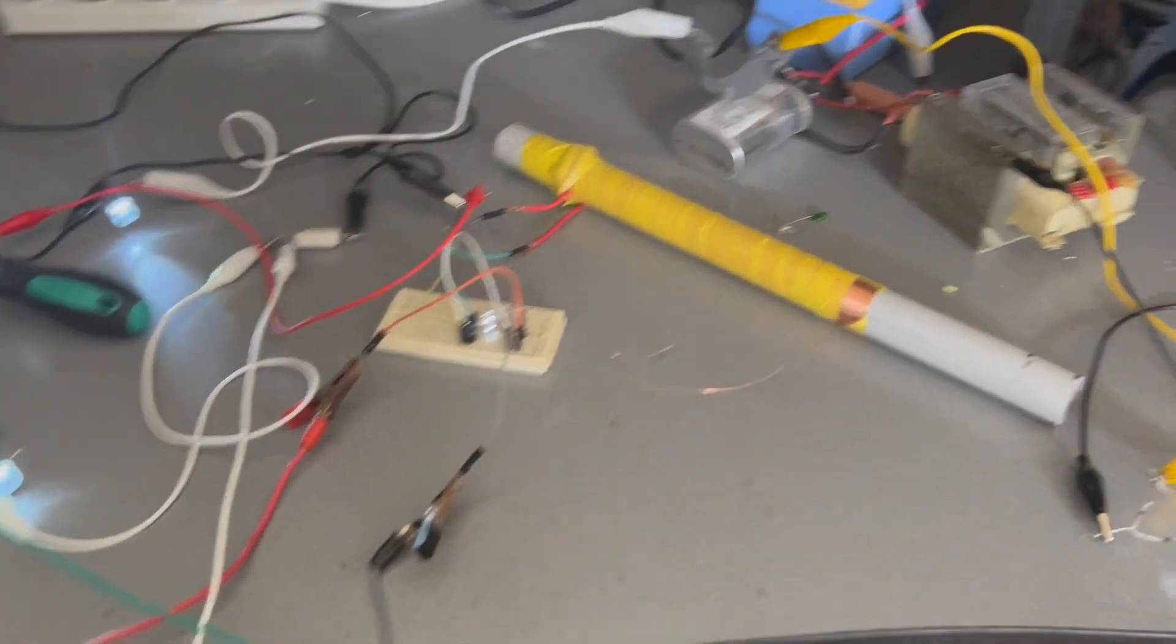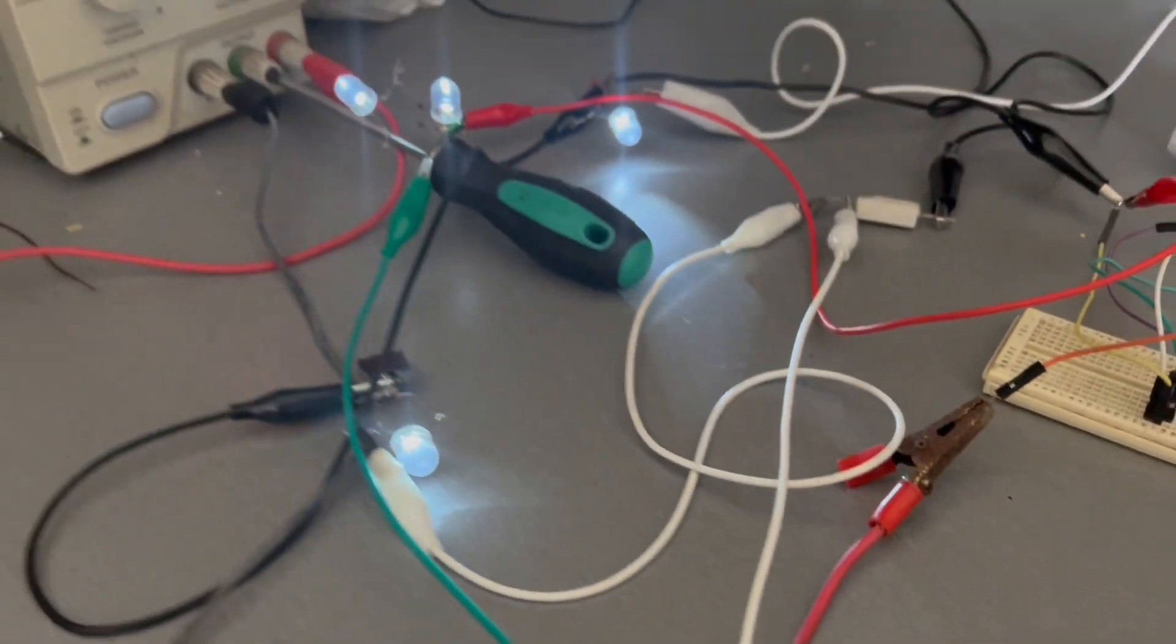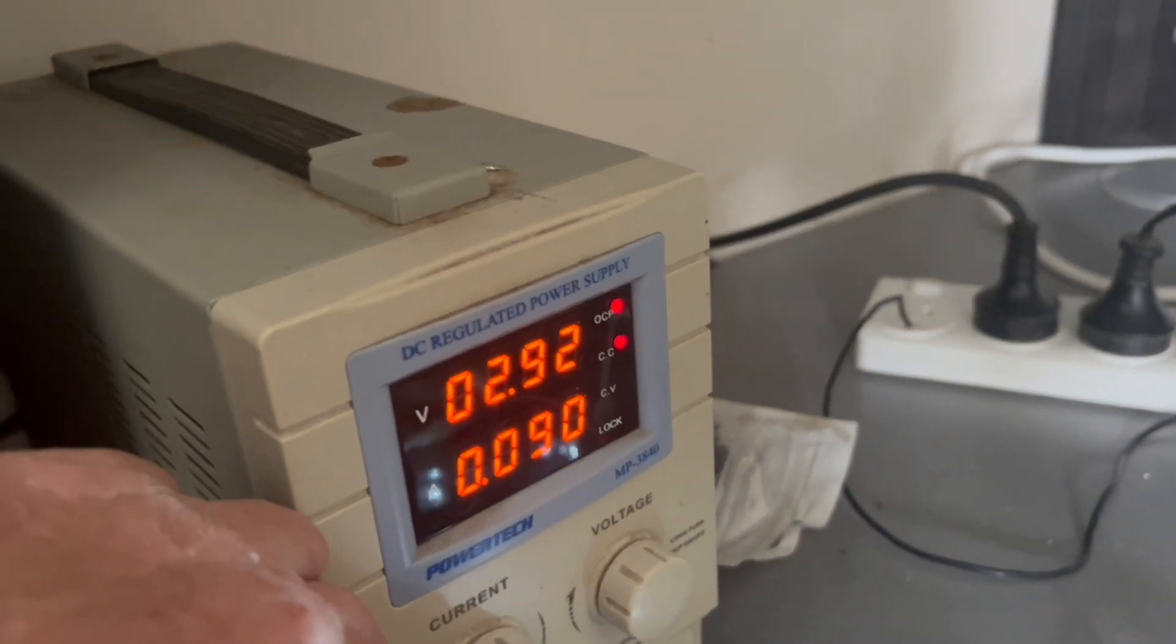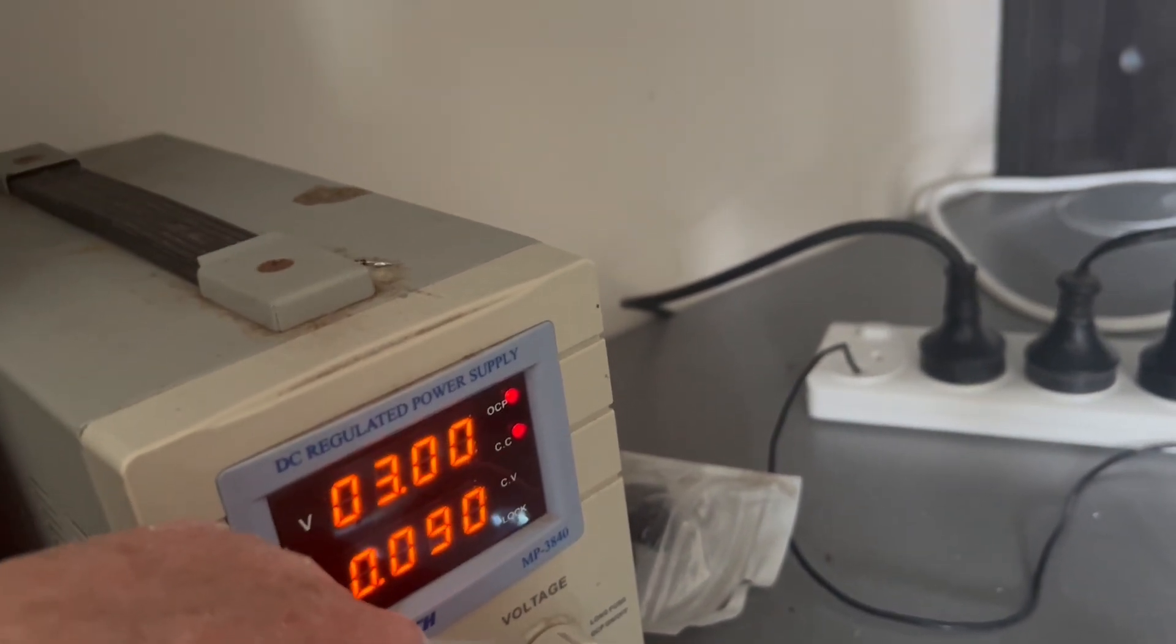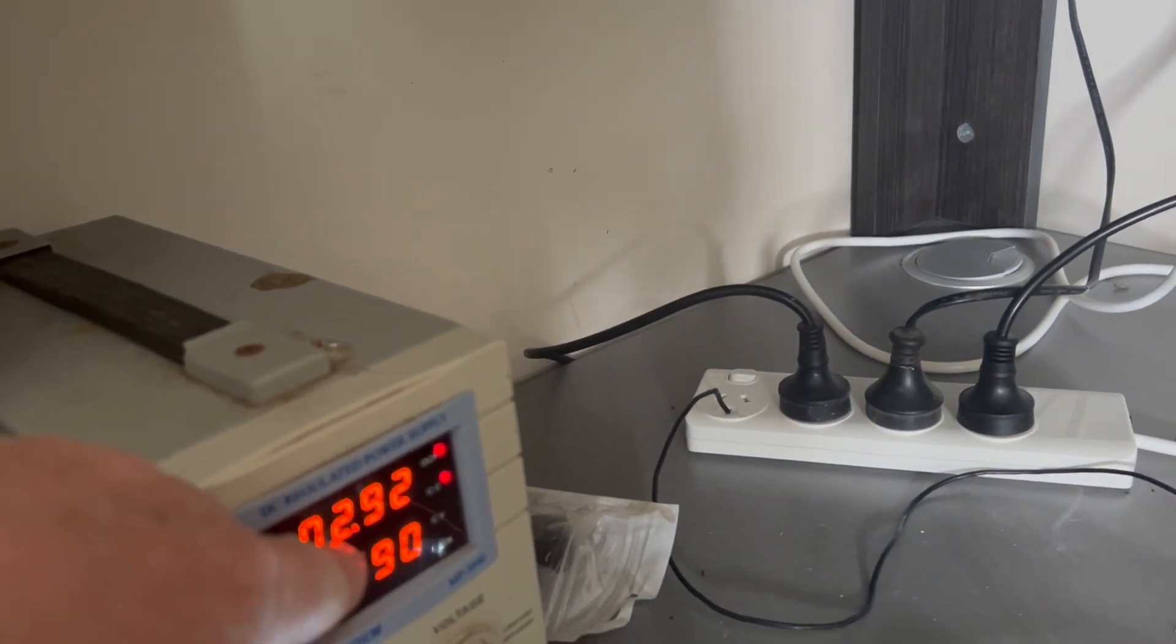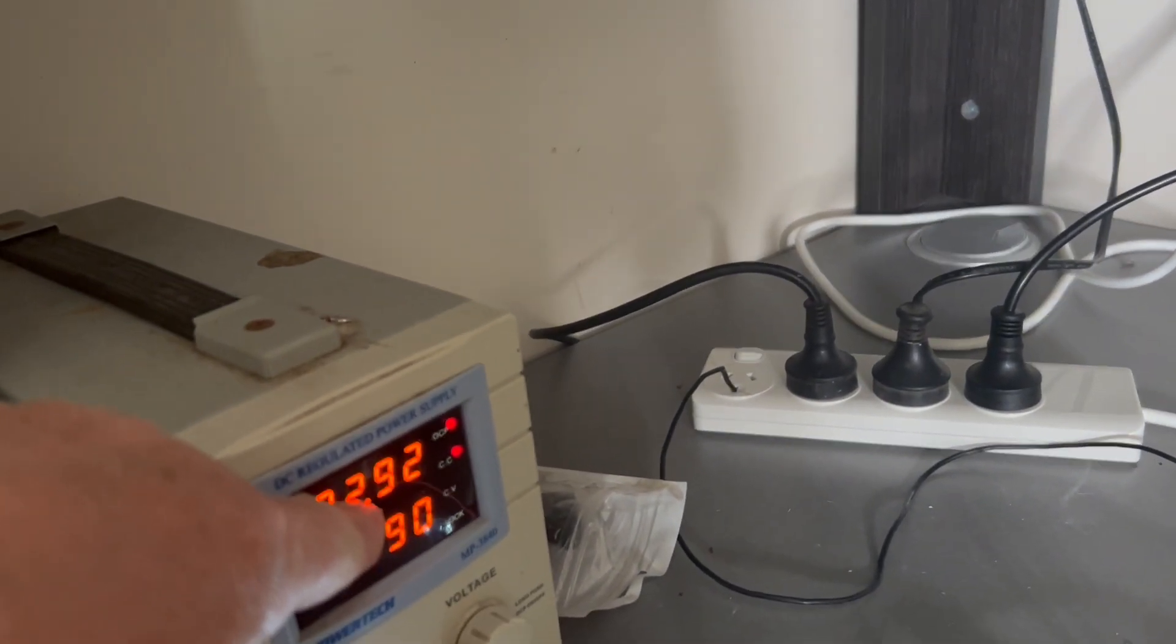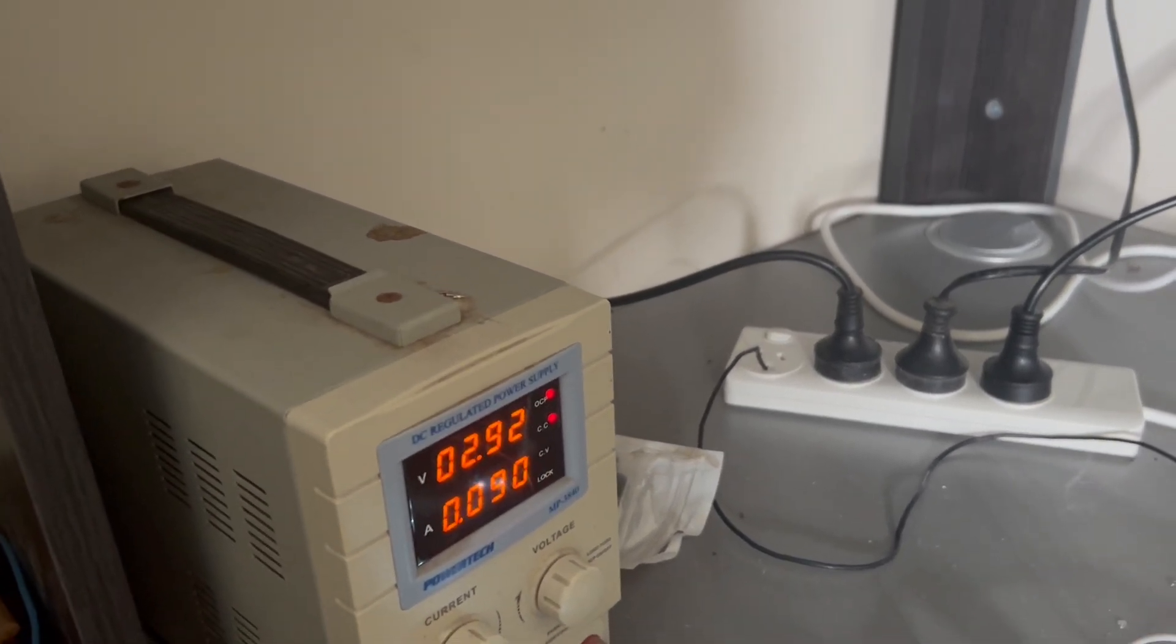And in closing, I just want to show you that I've got all these LEDs going. They're all pretty much as bright as they can be. And we've got our current set on 90 milliamps and our voltage set on 3 volts. So 2.92, that means we're using 0.08 of 1 volt. So not even 0.1 of a volt.